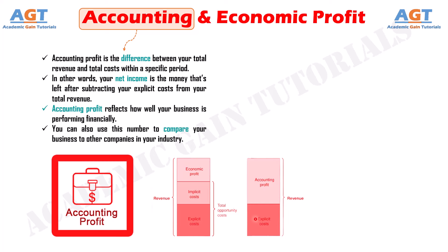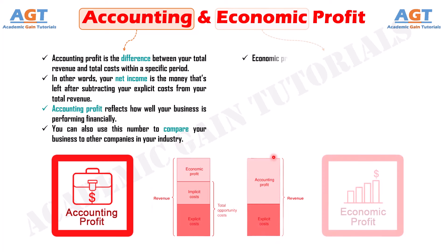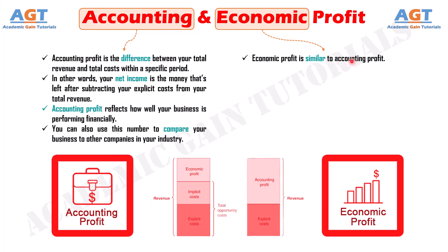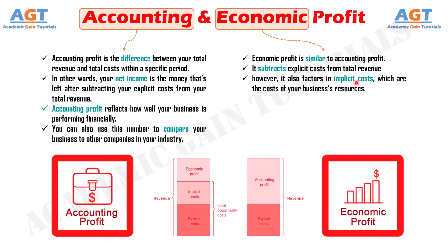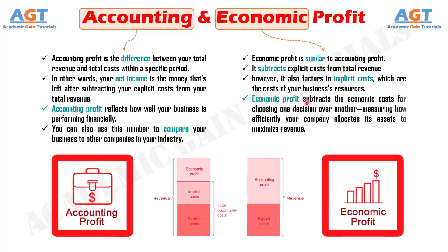Economic profit is similar to accounting profit — it subtracts explicit costs from total revenue. However, it also factors in implicit costs, which are the costs of your business's resources. Economic profit subtracts the economic costs for choosing one decision over another, measuring how efficiently your company allocates its assets to maximize revenue.